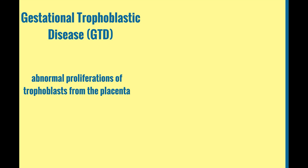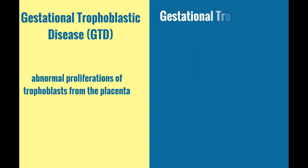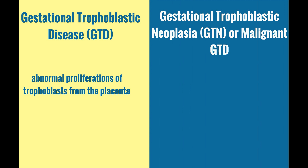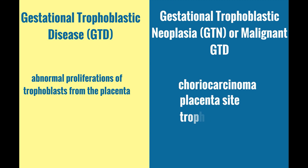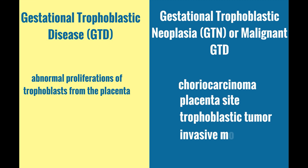Gestational trophoblastic disease, or GTD, are abnormal proliferations of trophoblasts from the placenta. Gestational trophoblastic neoplasia, or GTN, otherwise known as malignant GTD, includes choriocarcinoma, placental site trophoblastic tumor, and invasive moles.